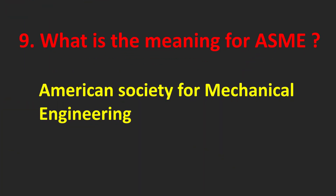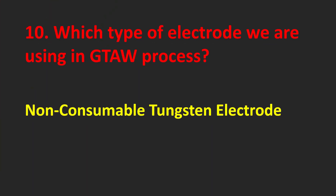What is the meaning of ASME? American Society for Mechanical Engineering. Which type of electrode are we using in the GTAW process? Non-consumable tungsten electrode.